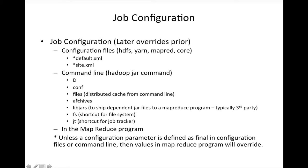At times you need to have a dataset shipped to all the nodes where the jobs are running — this is called distributed cache. For that there is a parameter called -files, which you can use while submitting jobs. -archives serves a similar purpose. And -libjars is used to ship dependent jar files to a MapReduce program, typically third-party ones.